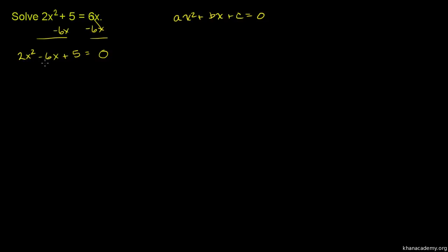There are many ways to solve this. We could try to factor it, but if we divide both sides by 2, we'd get integer coefficients on x squared and x, but 5 halves for the constant — so it's not easy to factor. We could complete the square, or apply the quadratic formula, which is really just a formula derived from completing the square. Let's do that.